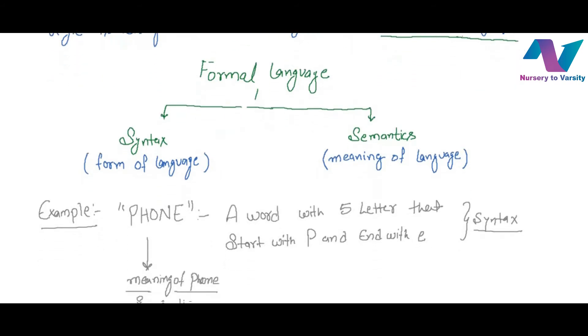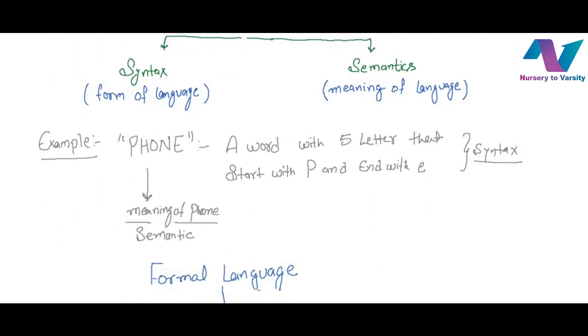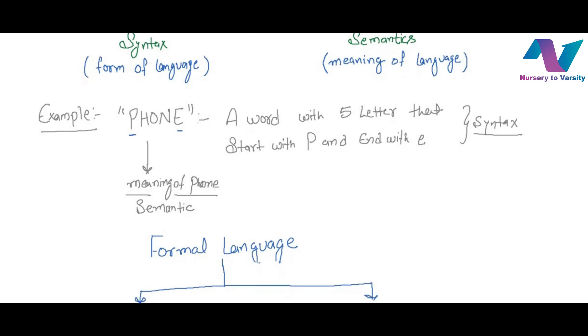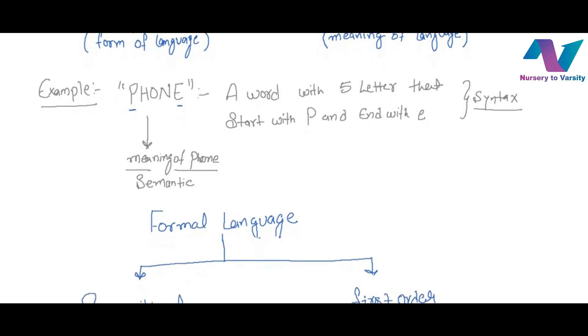We can understand this by one example. I have written here 'phone'. So a word with five letters that starts with P and ends with E is syntax. But the meaning of phone is under the category of semantics. These are the two components which we have to distinguish while designing formal languages.